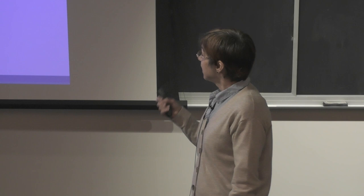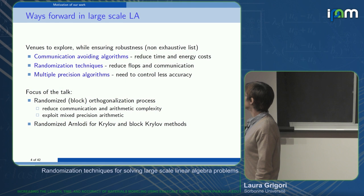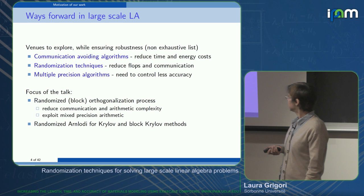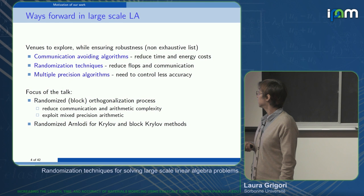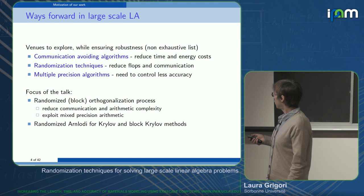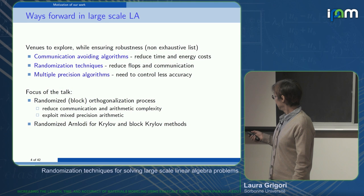Some of the venues we explore in our group are communication-avoiding algorithms that provably minimize communication — for LU factorization, QR factorization, and so on. Recently we focus on randomization techniques, which can reduce both flops and communication. We are also interested in multiple-precision algorithms and how to control the loss of accuracy. I'll explain why randomization is really suitable for these mixed-precision algorithms, focusing on the orthogonalization process.